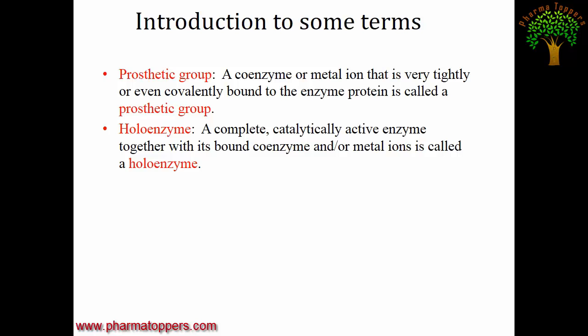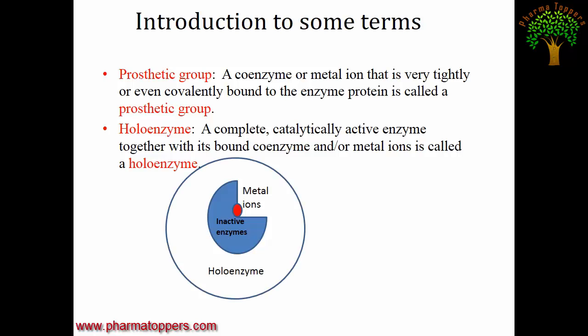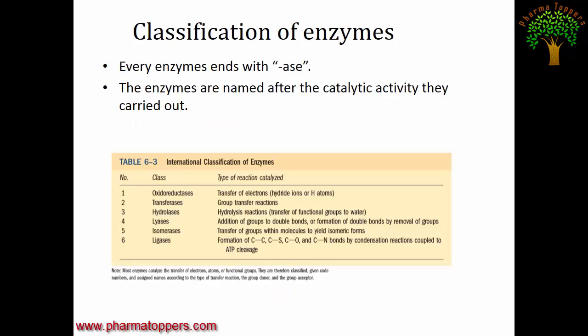A holoenzyme is a complete, catalytically active enzyme. Once the enzyme and its co-factor are bound together, the whole combined structure is called a holoenzyme. So the enzyme alone is in an inactive form, but once the metal ion binds at the catalytic active site, the combined form — enzyme plus metal ion — is called the holoenzyme.